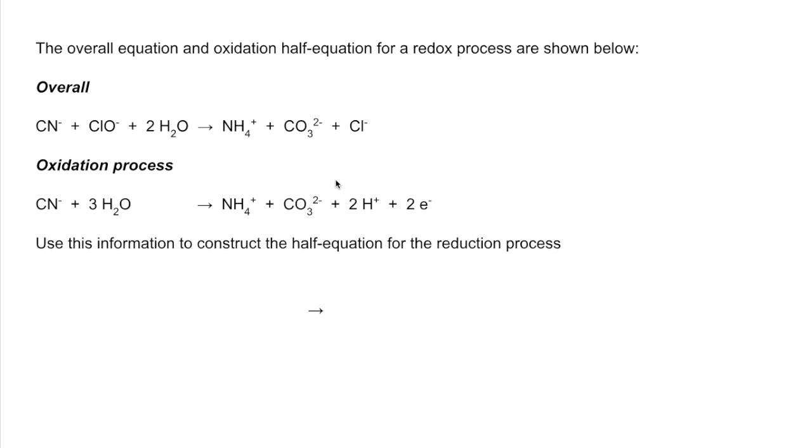Starting point is let's put in everything that we need. The ClO⁻ is missing, the Cl⁻ is missing. Now if we look at the waters in the overall equation we've got 2, but we've got 3 involved in the oxidation process. We need to basically bring this 3 down to 2. If we put a water on the right hand side of the reduction process, that would do that when we add them together. The other thing we're going to need is we haven't got any H pluses in the overall equation, but we've got 2 here, so they obviously need to go there.